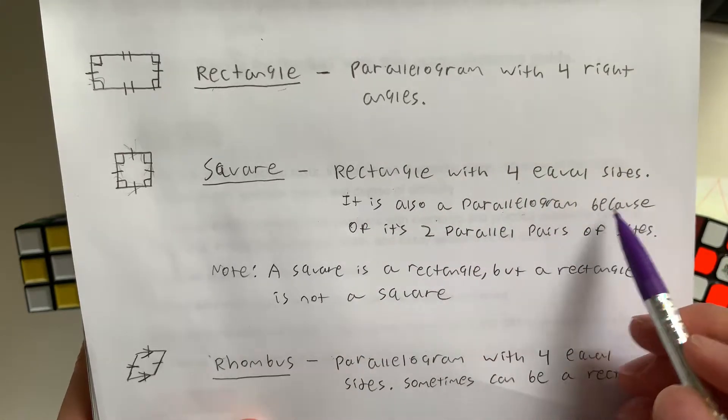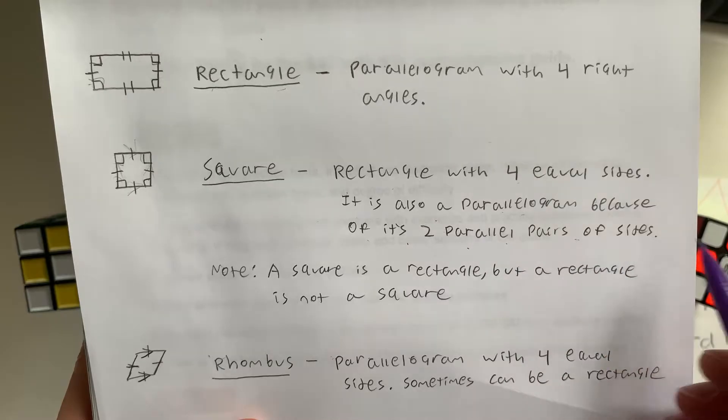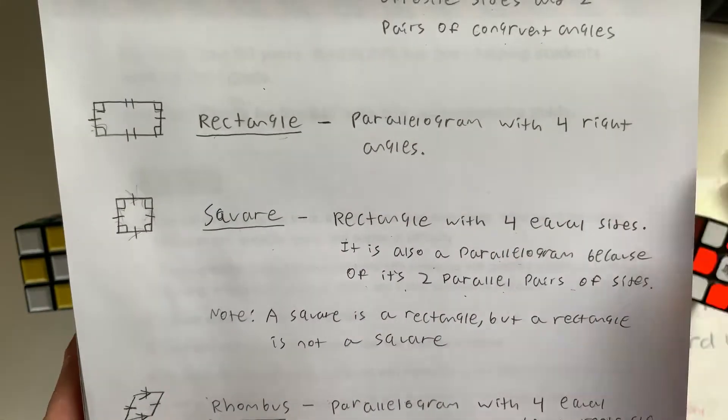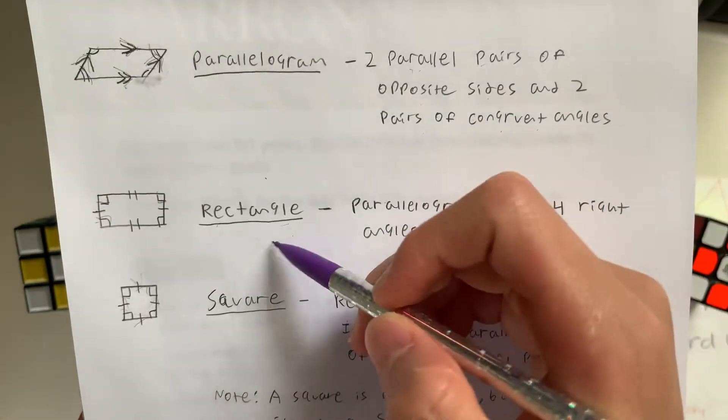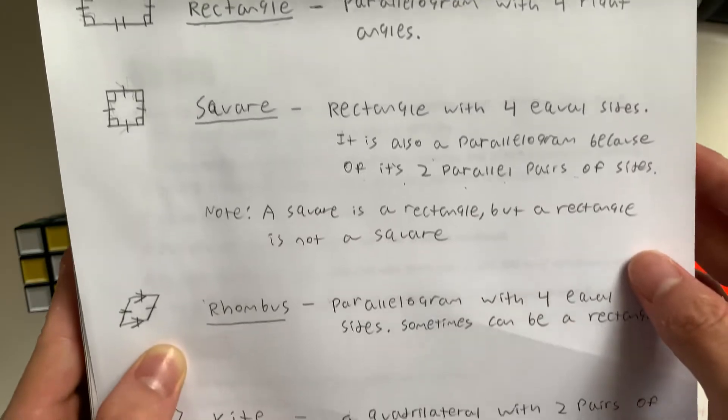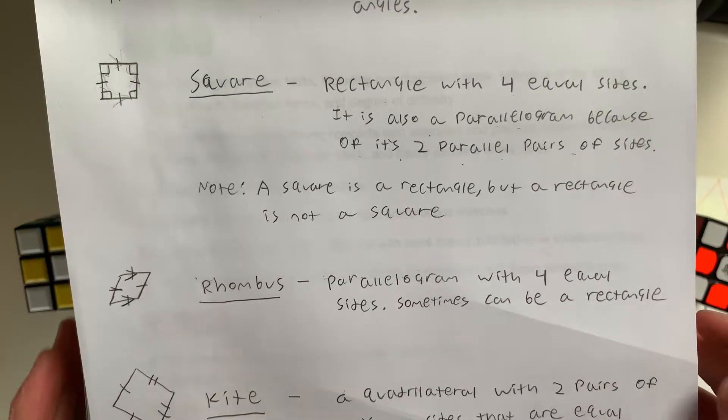It is also a parallelogram because of its two parallel pairs of sides. As I just explained, a square is a rectangle and a rectangle is a parallelogram. Remember that order. This is a side note so you don't get confused.